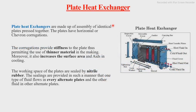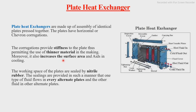Next we have plate type heat exchangers. Plate heat exchangers are made of an assembly of identical plates placed together. The plates have horizontal or chevron corrugations, as seen in this figure where various plates are pressed together. The corrugations provide stiffness to the plates, allowing use of thinner material while still withstanding the pressure generated. Moreover, corrugations also increase the surface area, which ultimately helps in efficient cooling.